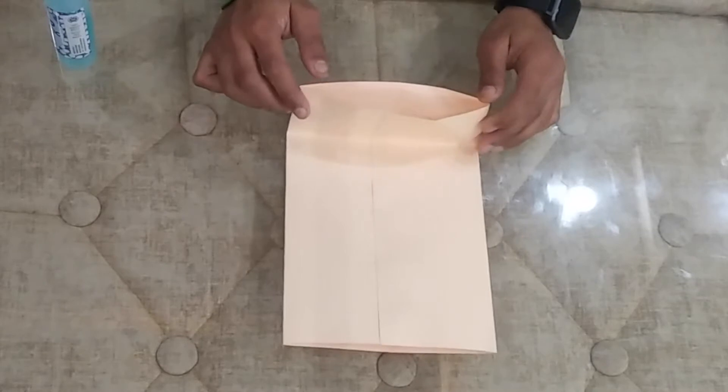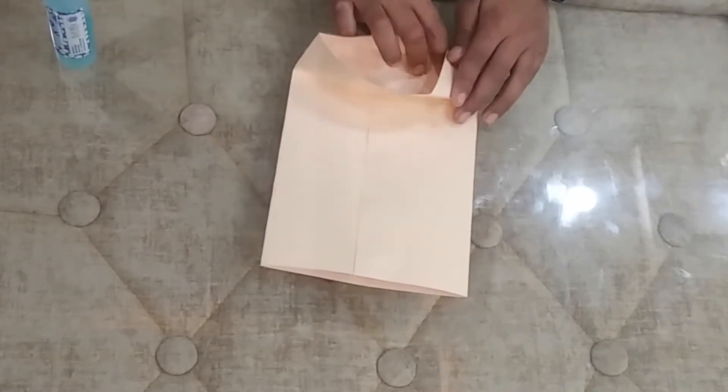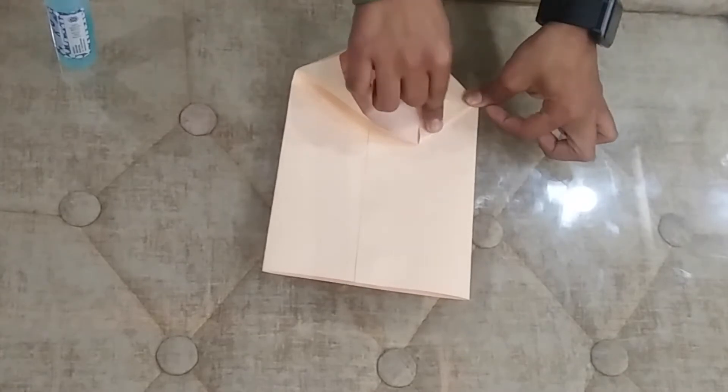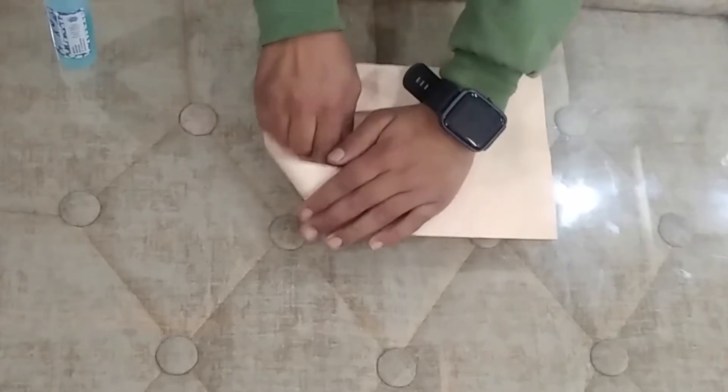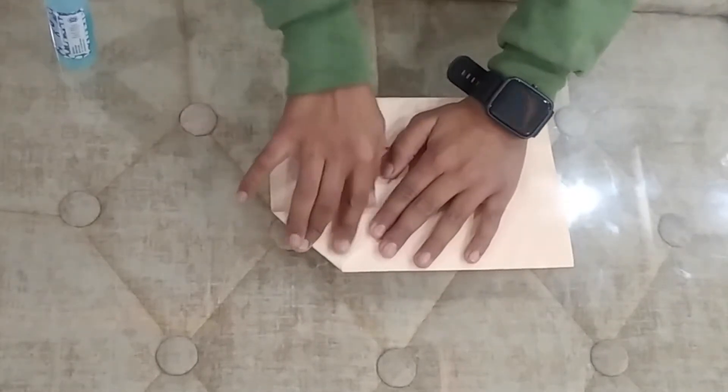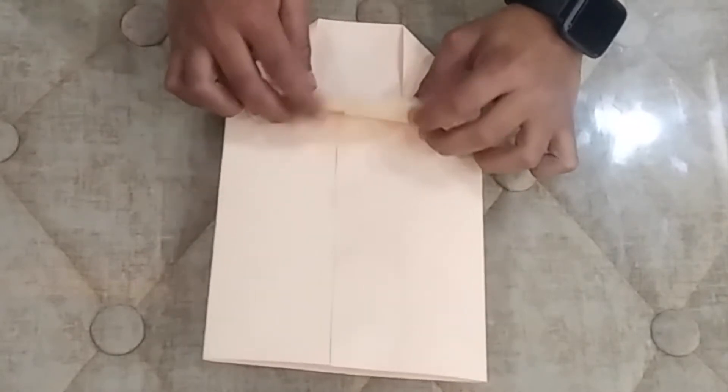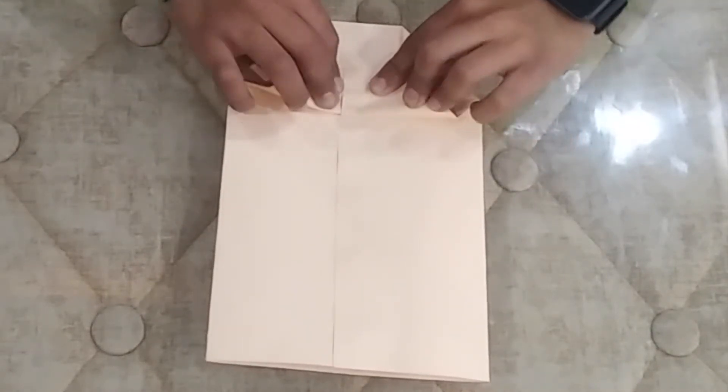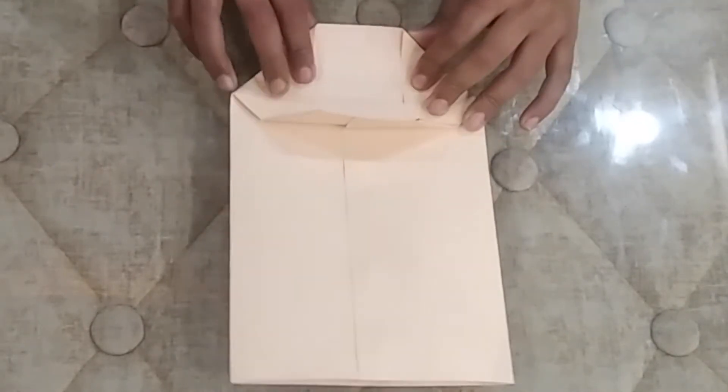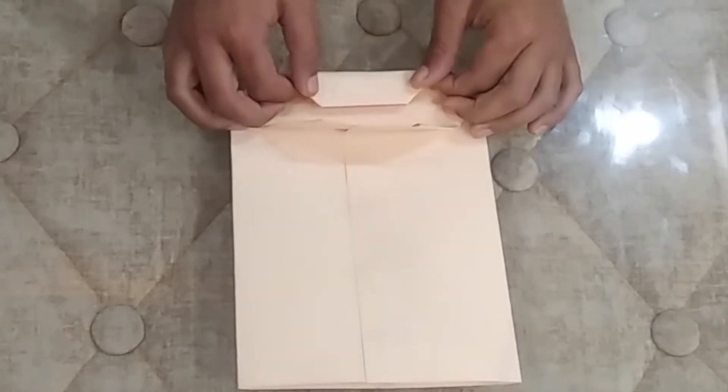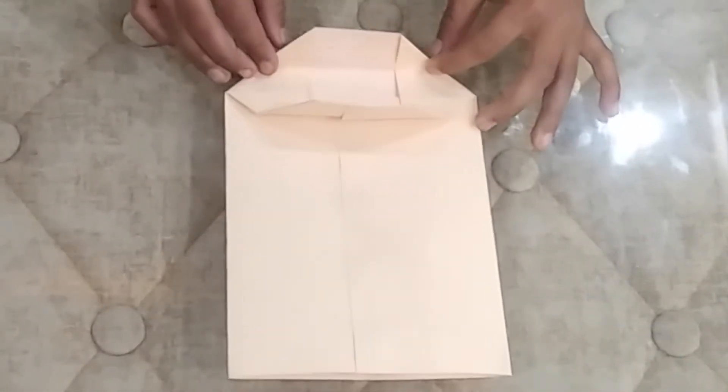Open it and turn it on the sides. Now we will stick on the mark, on this line, to set it onto the mark on this side and paste it. On this side we will place it onto the mark and paste it here.